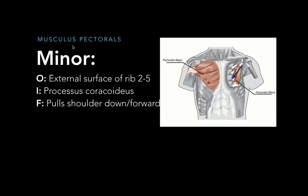The next one is musculus pectoralis minor, as you see here. It originates at the external surface of the second to fifth rib and inserts at the processus coracoideus of the scapula. The function of this is to pull the shoulder down and forward, as you see in this arrow.